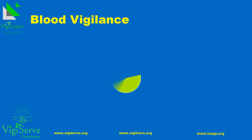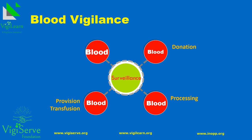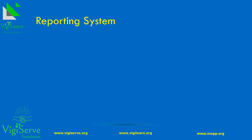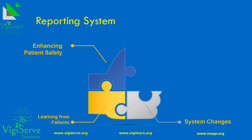Hemovigilance is the set of surveillance procedures covering the entire blood transfusion chain, from the donation and processing of blood and its components, through to their provision and transfusion to patients, and including their follow-up. Hemovigilance can identify transfusion hazards and demonstrate the effectiveness of interventions. The reporting systems play a fundamental role in enhancing patient safety by learning from failures and then putting in place system changes to prevent them in future.